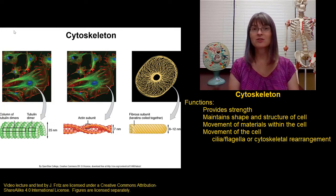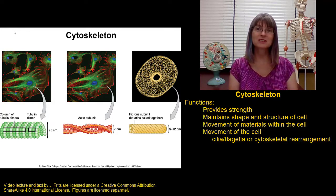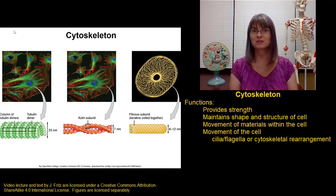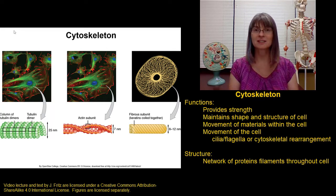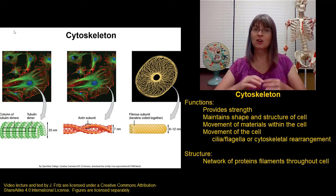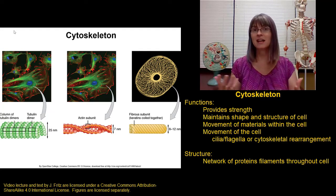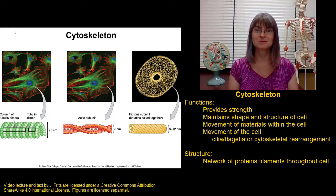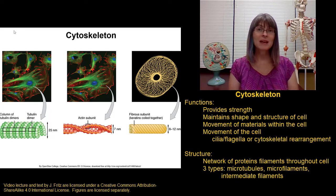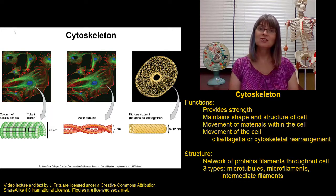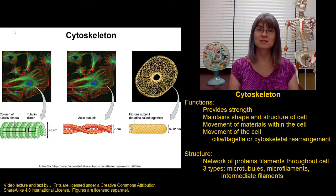Let's take a look at the structure of the cytoskeleton that allows it to carry out all of these different functions. The basic structure of the cytoskeleton is a network of protein filaments. These are long thin proteins that are formed together into networks within the cell. There are three main types of these protein filaments and they each have their own important functions.